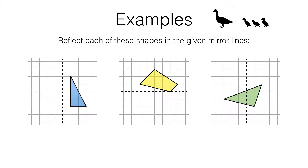The way we're going to do this is by considering each corner one at a time. Let's start with the top corner or vertex. What we need to do is count how far away from the mirror line that corner is. It is one square away, so when it's reflected it will be reflected the same distance on the other side of the mirror line — one square on the other side would be here.